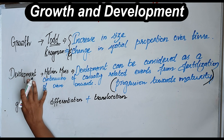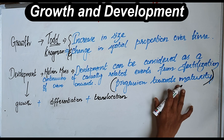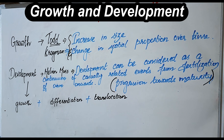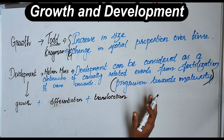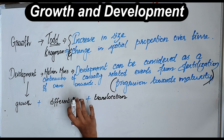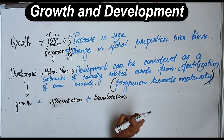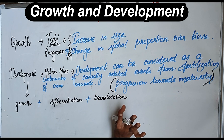Then coming to development. In simple words, development is a progression towards maturity. Development was described by Malvin Moses as a continuum of events which will happen from the fertilization of the ovum onwards. All the events that occur from the time of fertilization till the end of lifetime — that is called development. All changes in a life.